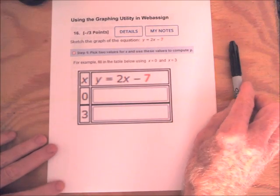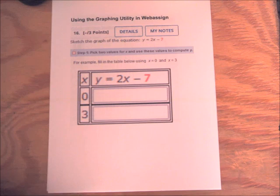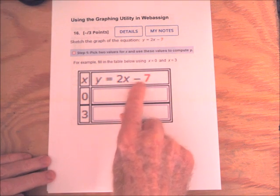Using the graphing utility in WebAssign to make straight lines. Okay, so if we want to determine the graph of the equation y equals 2x minus 7,